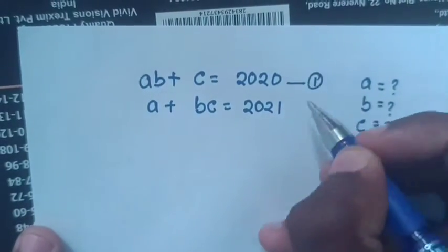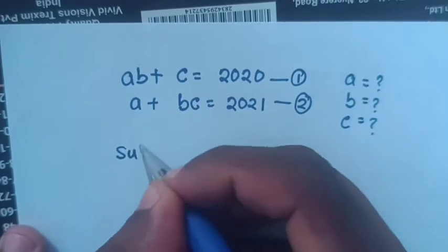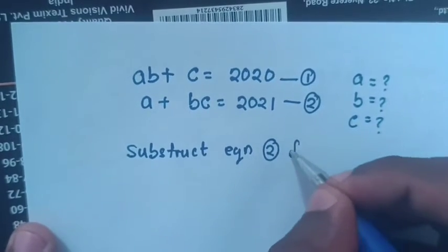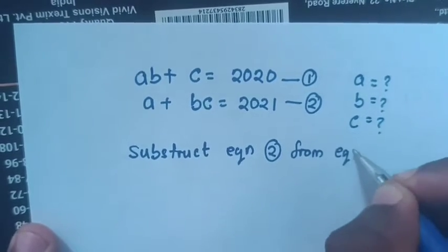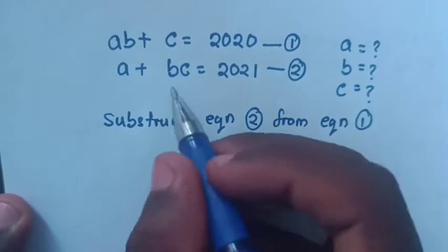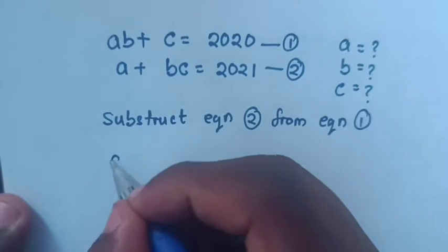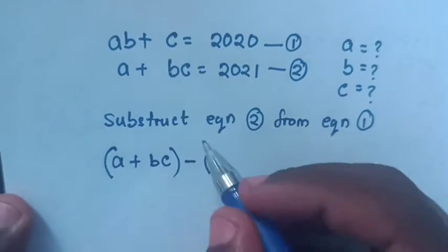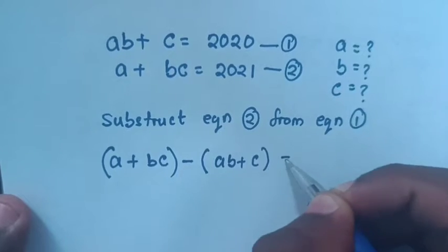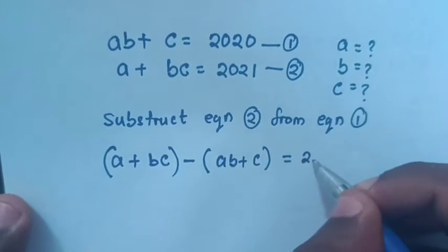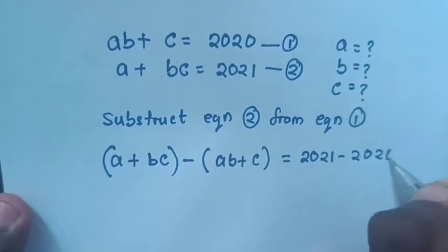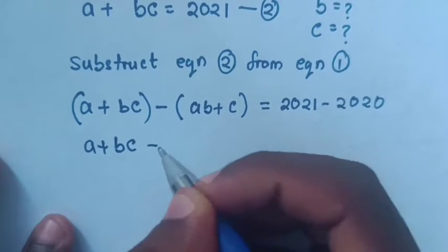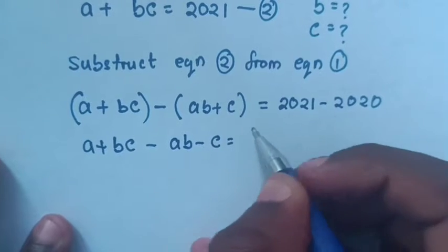Let this be equation 1 and this be equation 2. Next step, we subtract equation 1 from equation 2. Therefore, equation 2 minus equation 1 gives us: A plus BC minus AB minus C equals 2021 minus 2020, which equals 1.